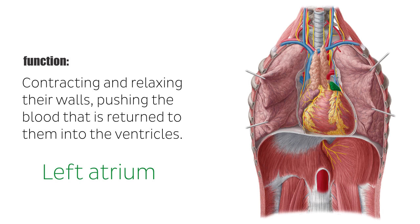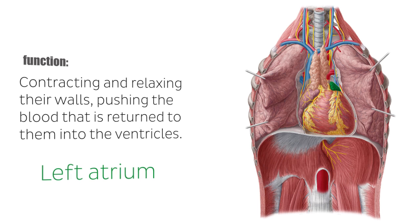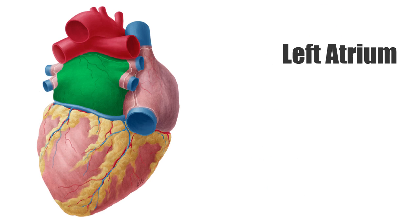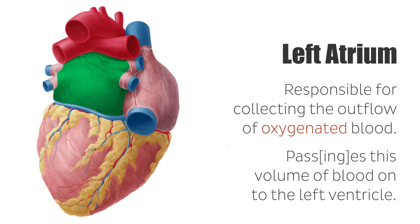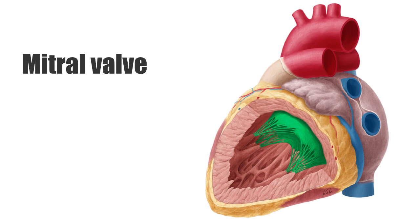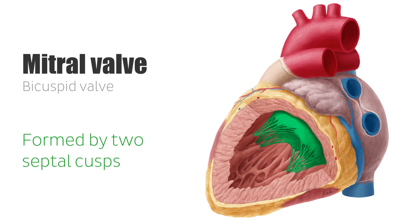In this tutorial, we will focus on the left atrium. The left atrium, as seen here highlighted in green on the diaphragmatic surface of the heart, is responsible for collecting the outflow of oxygenated blood that runs back to the heart from the pulmonary veins. It passes this volume of blood onto the left ventricle as the atrium contracts and the mitral valve opens. The mitral valve is also known as the bicuspid valve because it is formed by two septal cusps. Occasionally, it is also mentioned in literature as the left atrioventricular valve.